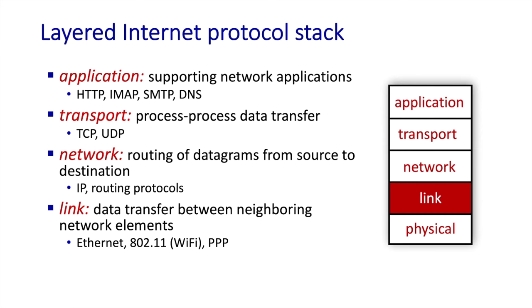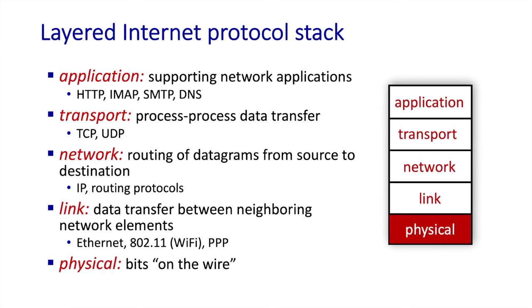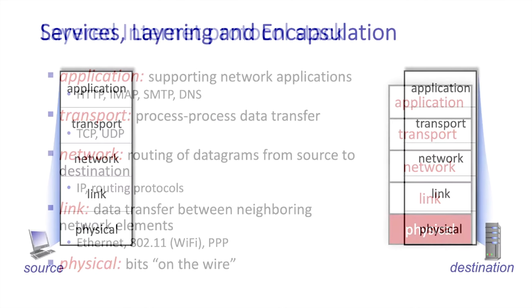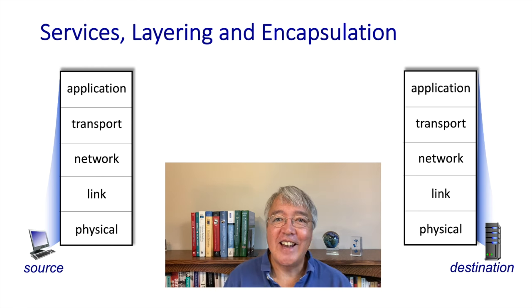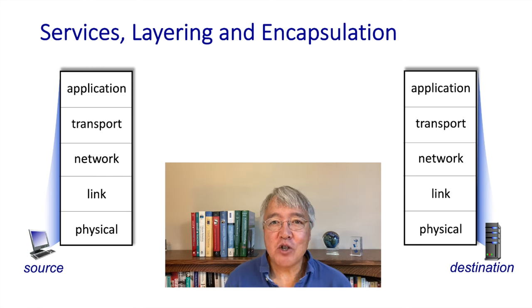The link layer transfers data between two network devices at either end of the same communication link, and the physical layer controls the sending of bits into that link.